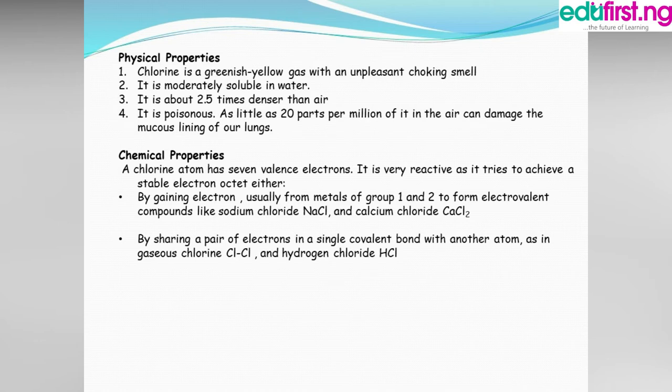Physical properties of chlorine: Chlorine is a greenish-yellow gas with an unpleasant choking smell. It is moderately soluble in water. It is about 2.5 times denser than air. Chlorine is very poisonous — as little as 20 parts per million in the air can damage the mucous lining of the lungs.